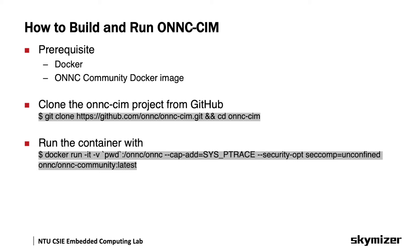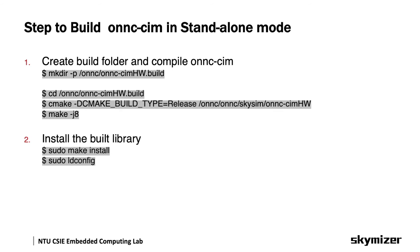Now you can start the container and mount the project folder with permission parameters — you can just copy the command from the project README. After the Docker container is ready, we can start to build the project in standalone mode. Create a build folder and use CMake to set up parameters, then start to compile. Compilation will finish in a few minutes. After that, you can use make install and ldconfig to install the project as a library in the container.